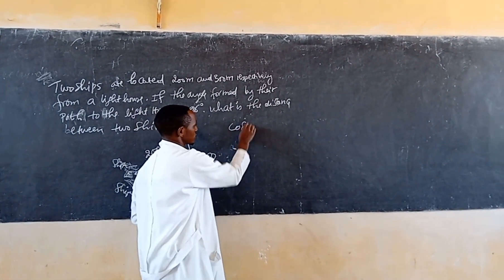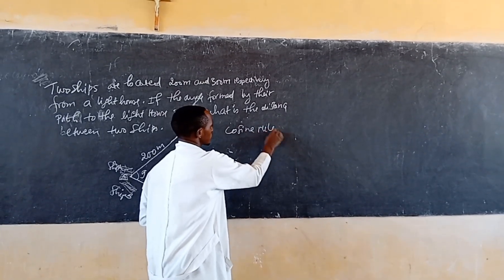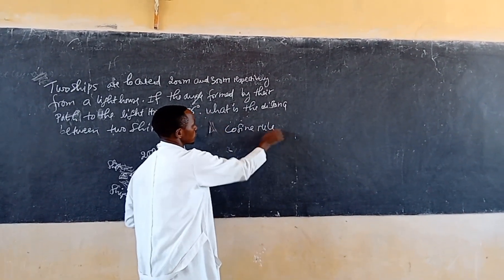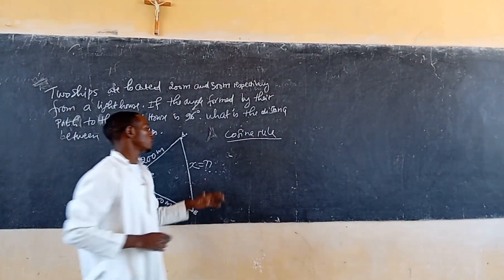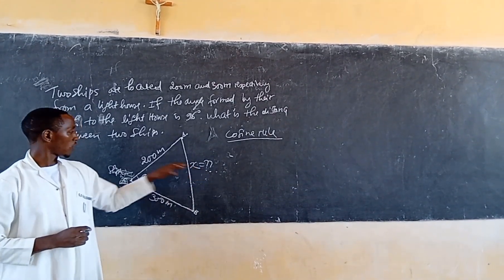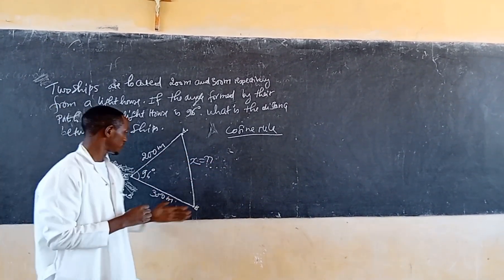So cosine rule is like that, cosine rule. By using cosine rule, then this x squared, cosine rule is like that. For example,